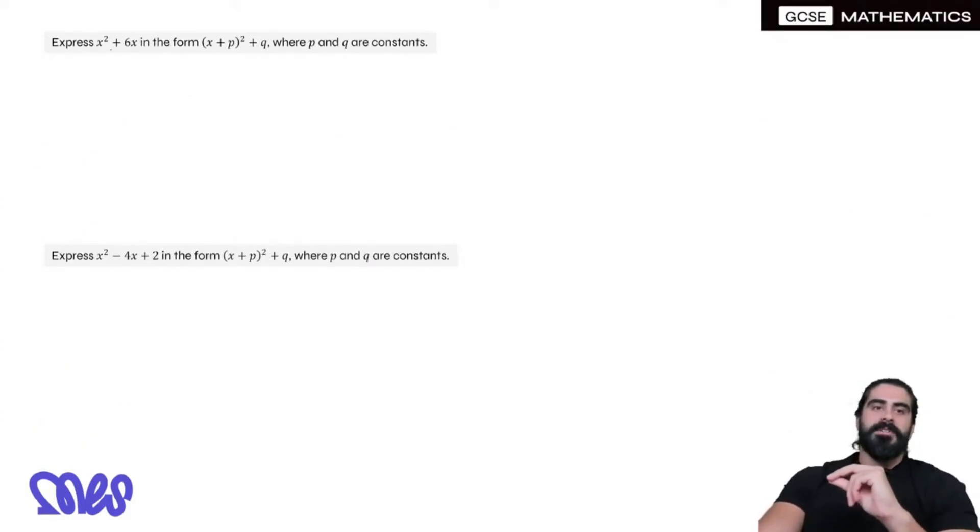Express x² + 6x in the form (x + p)² + q, where p and q are constants. Basically asking us to complete the square.